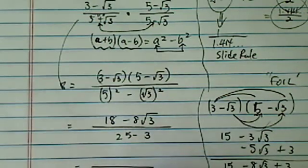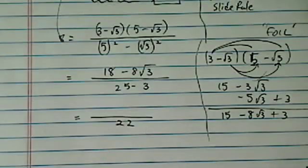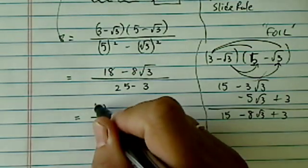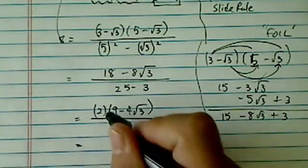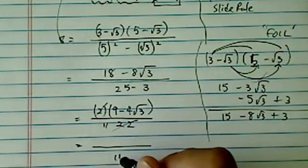Since the bottom is 22, it's also an even number. We're going to have a 2 pulled out. So I have 9 minus 4 radical 3. Cancel this out, I have 11 on the bottom.